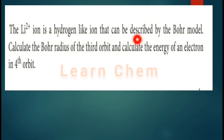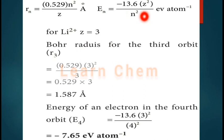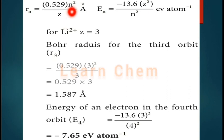Calculate the Bohr radius of the third orbit of Li²⁺. The formula is rₙ = 0.529 × n²/Z Å. For Li²⁺, Z = 3 and n = 3. Substituting: r₃ = 0.529 × 9/3 = 1.587 Å.